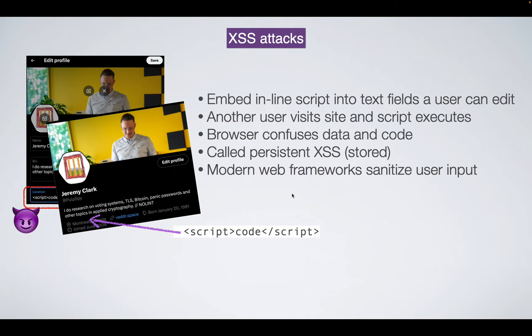Today most developers use frameworks that sanitize user input automatically, making it hard to accidentally introduce this vulnerability. Frameworks disallow characters like angle brackets in user-supplied text, detect things that look like tags — even with Unicode obfuscation — and sanitize them. There are also newer web standards that let you explicitly tag content as display-only, never to be executed as code.